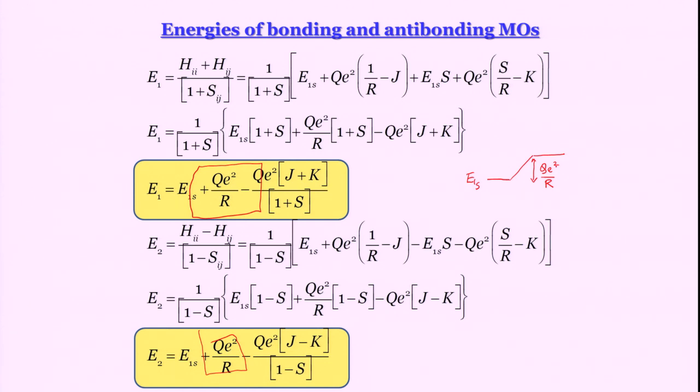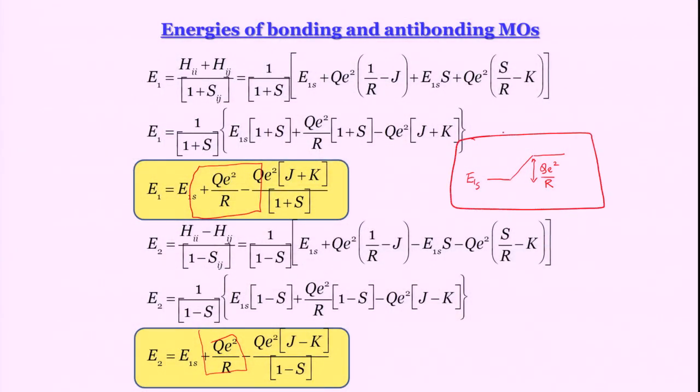J and K depend strongly on capital R and can be evaluated numerically — for different values of R you compute the integrals by brute-force summation, which is where computer programming becomes important in chemistry. The integrals J and K both have minima as functions of R. When J and K are added, they reinforce each other, giving a large stabilization (a dip in energy). When K is subtracted from J, you get a positive-going shape — destabilization.